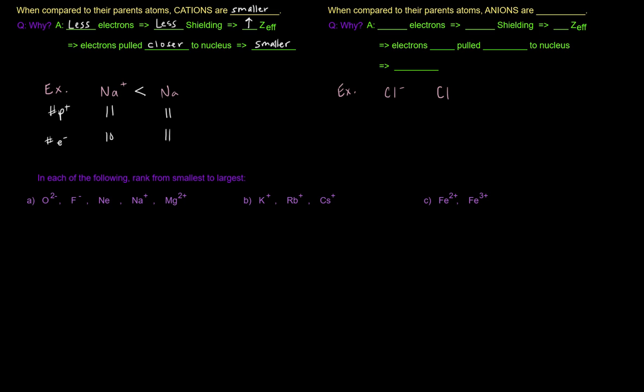Now, as far as anions go, anions compared to their parent atoms, when compared to their parent atoms, anions are bigger, okay? And anions are negatively charged because they gained electrons, so there's more electrons. So if there's more electrons, there's gonna be more shielding, and the electrons will be repelled by the inner electrons a little bit more. Thus, the positive charges in the nucleus can't pull on them as much, so the effective nuclear charge decreases, and so the electrons are not pulled in closer to the nucleus. So instead, they kind of go out a little bit, and so the anion is bigger.